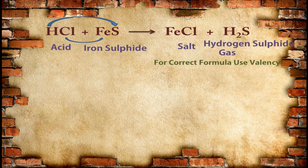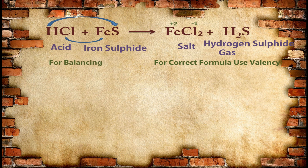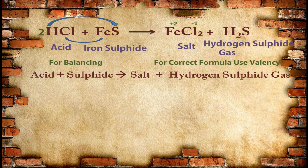For making the correct formula of the salt FeCl, you need to know the valency of Fe and Cl. The valency of Fe is +2 — from the reactant FeS you can identify it, because iron is a transition metal with variable valency and it is written with S, which has a valency of −2, so iron's valency must be +2. Chloride valency is −1. So the formula of this salt will be FeCl₂. For balancing the equation, write 2 with HCl. In these reactions, whenever acid reacts with a sulfide compound, always salt and hydrogen sulfide gas is released.